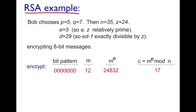Before the math, let's look at a concrete example. We have the bit pattern 00001000, which is m = 12. Bob wants to encrypt this, so he chooses two small prime numbers: p = 5 and q = 7. Therefore n = p × q = 35. Recall that z = (p − 1)(q − 1) = 4 × 6 = 24.